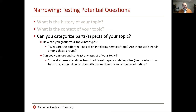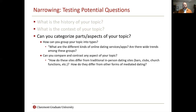Next, try breaking your topic apart and see if questions come from that. How can you group your topic into types? What are the different kinds of online dating services and apps? Are there wide trends among these groups, or specific camps? And can you compare or contrast any aspect of your topic? How do these sites differ from traditional in-person dating like bars and clubs? Or how do they differ from other forms of mediated dating like classified ads or video dating booths?